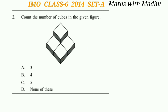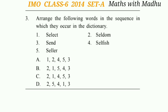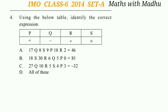Question 3: Arrange the following words in the sequence in which they occur in the dictionary — select, seldom, send, selfish, and seller. Words are arranged in alphabetical order in a dictionary, so the correct arrangement is option C: 2, 1, 4, 5, 3.